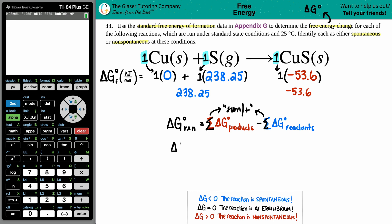Delta G for the whole entire reaction equals the sum of all the products, which is one product, negative 53.6, and I'm just going to subtract that by the 238.25.